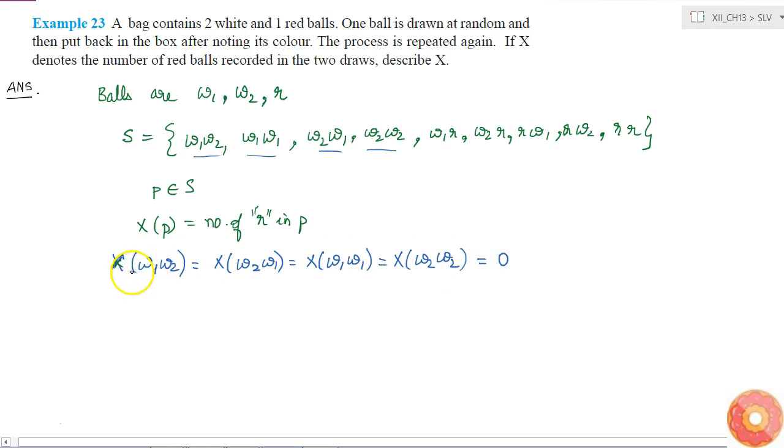Similarly, if we consider these four cases now, it means that in the first draw I got a white ball and second draw I got a red ball. Here also it is the same. Here I got a red ball first in the first draw and the white ball in the second draw, and here also it is the same. So in all these four cases there is only one red ball that is taken out. The red ball is taken out only once in all these four cases, so X of